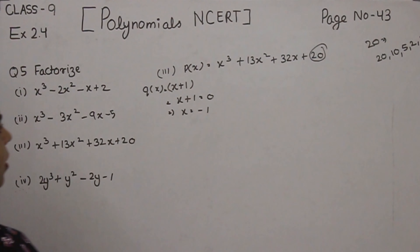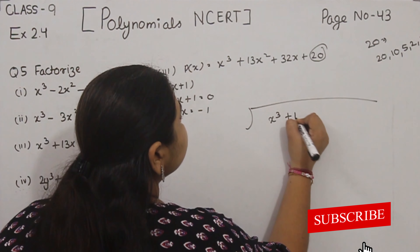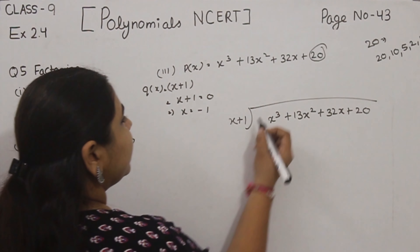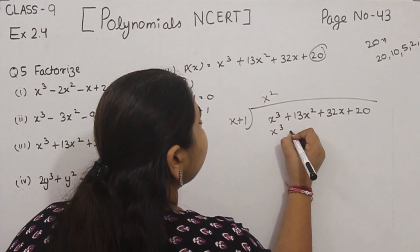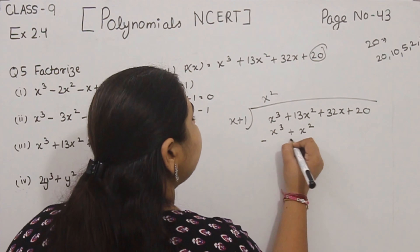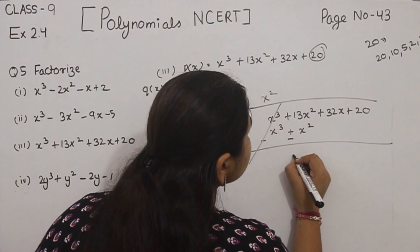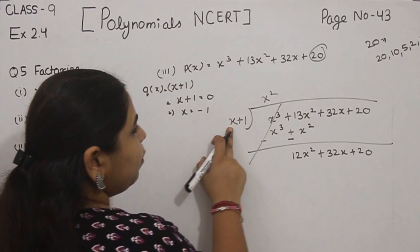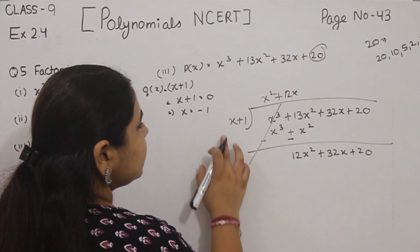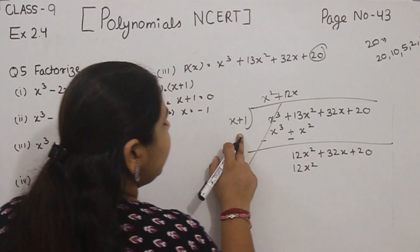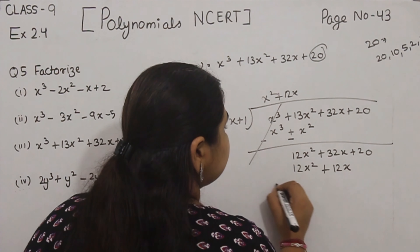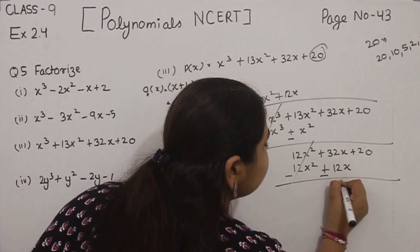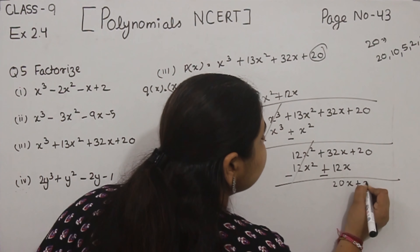Now we will divide. So x³ + 13x² + 32x + 20 divided by x + 1. We get x², giving x³ + x². Sign changed, cancelled. Now we get 12x² + 32x + 20. We need 12x, so we write +12x. Multiplying: 12x² + 12x. Sign changed, plus-minus-minus, giving 20x + 20.